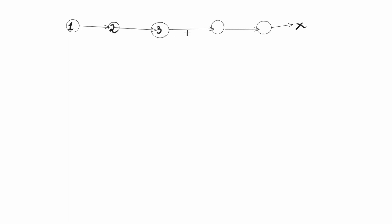So this is a linked list. In this linked list, the first node element is 1, the second node element is 2, the third node element is 3, the fourth node element is 4, the fifth node element is 5. My approach is — listen carefully — approach is very important when it comes to programming. This is the head.